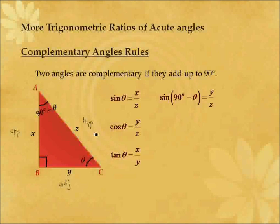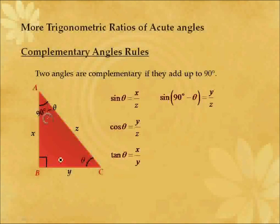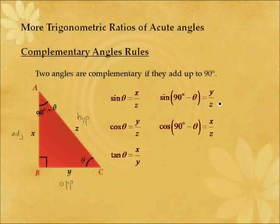The sine of 90 degrees minus theta, which is this angle over here, is defined as y over z. With respect to this new angle, y is now the opposite, x is the adjacent, and z remains the hypotenuse. So opposite over hypotenuse is y over z. The cosine of 90 degrees minus theta is defined as adjacent over hypotenuse, which is x over z. And the tangent of 90 degrees minus theta is defined as opposite over adjacent, which is y over x.